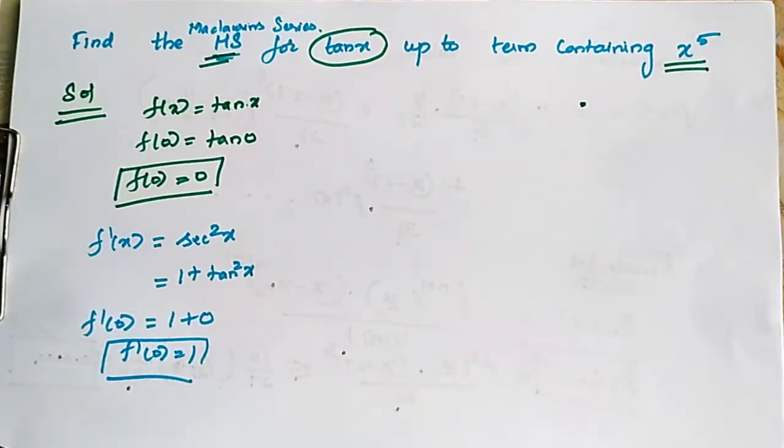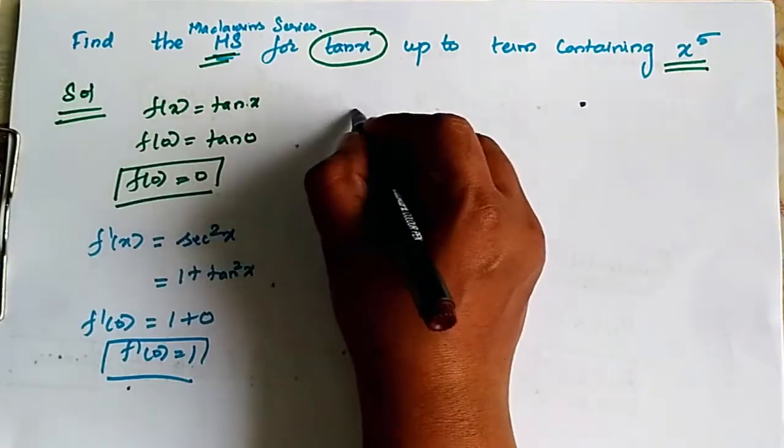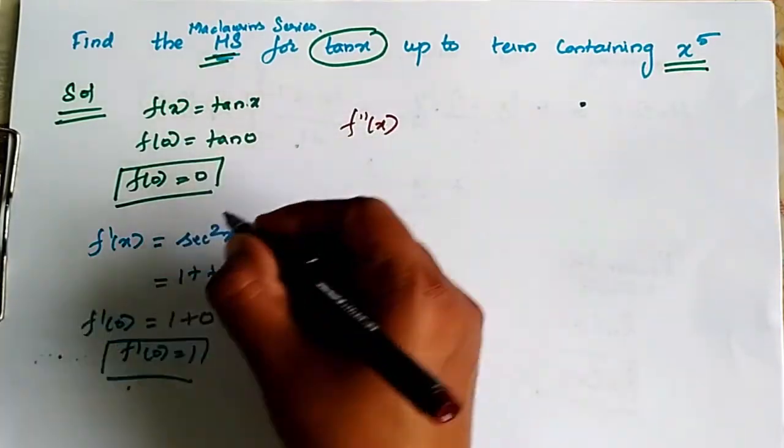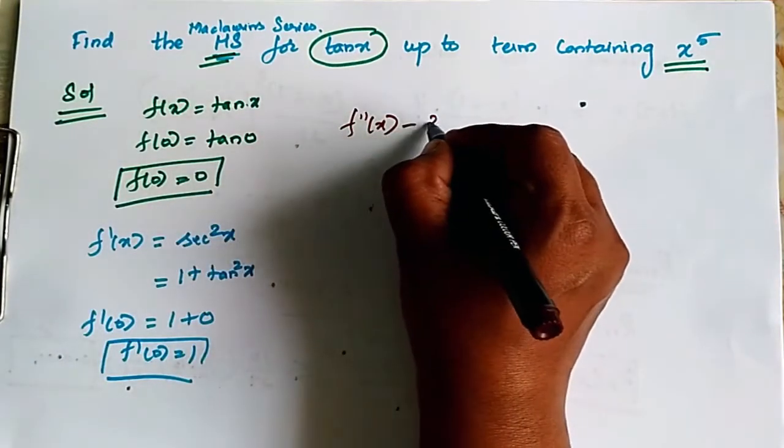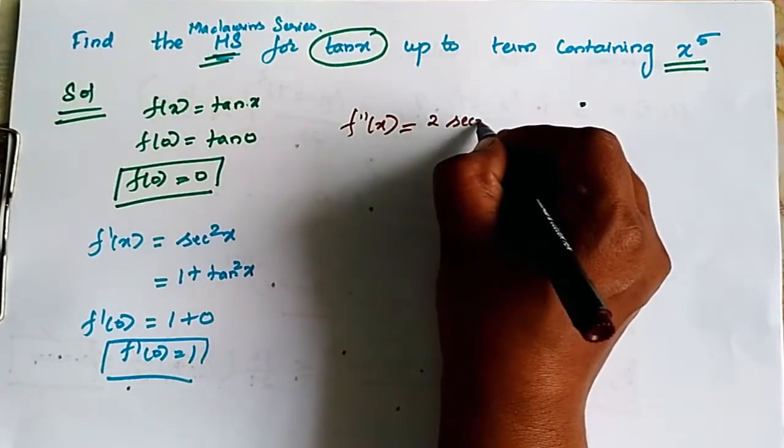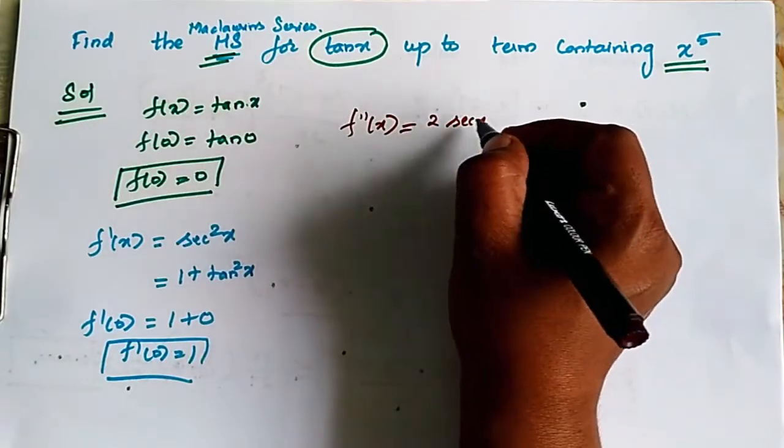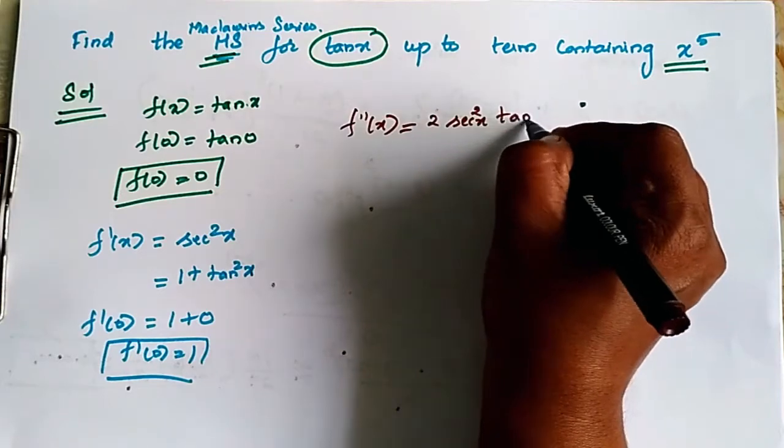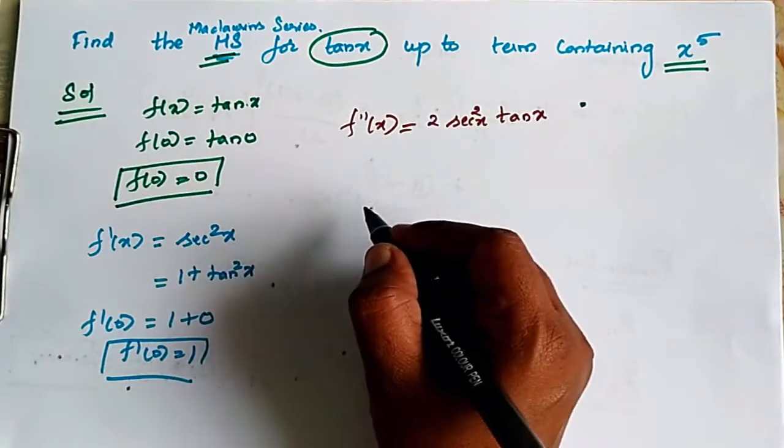Okay next, f double dash. f double dash of x is equal to, we differentiate, 2 secant x. When we differentiate secant x, we get secant x tan x, so we get secant square x tan x.